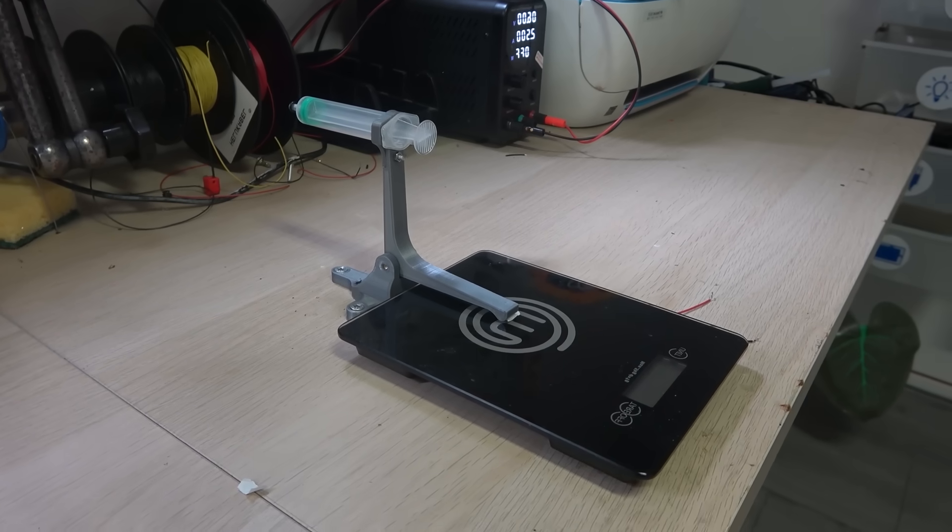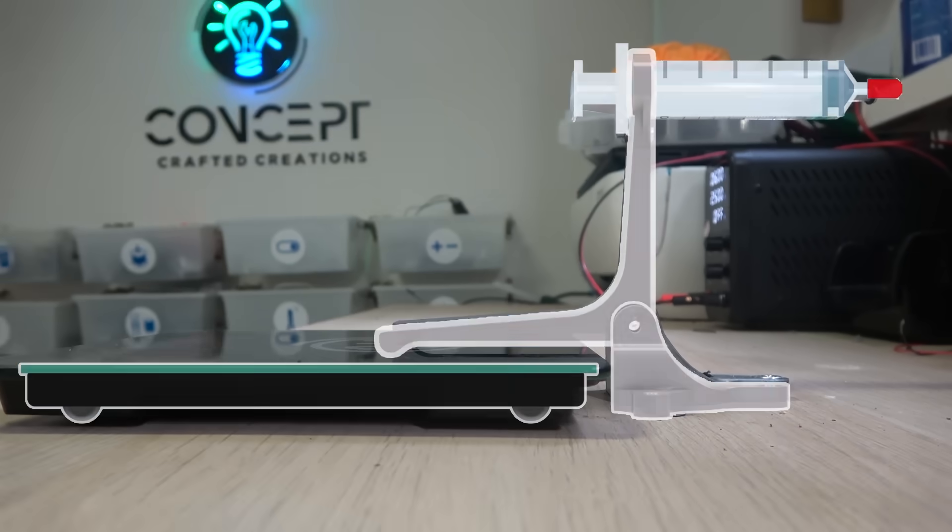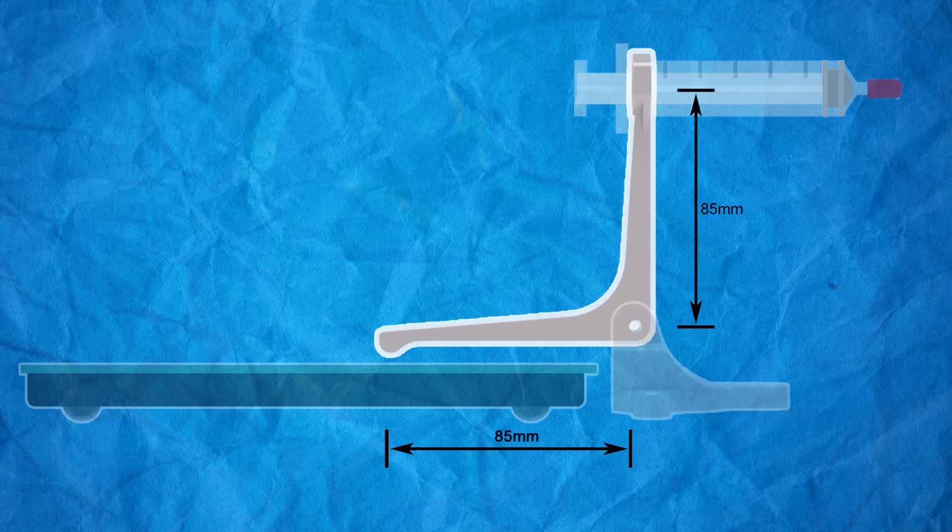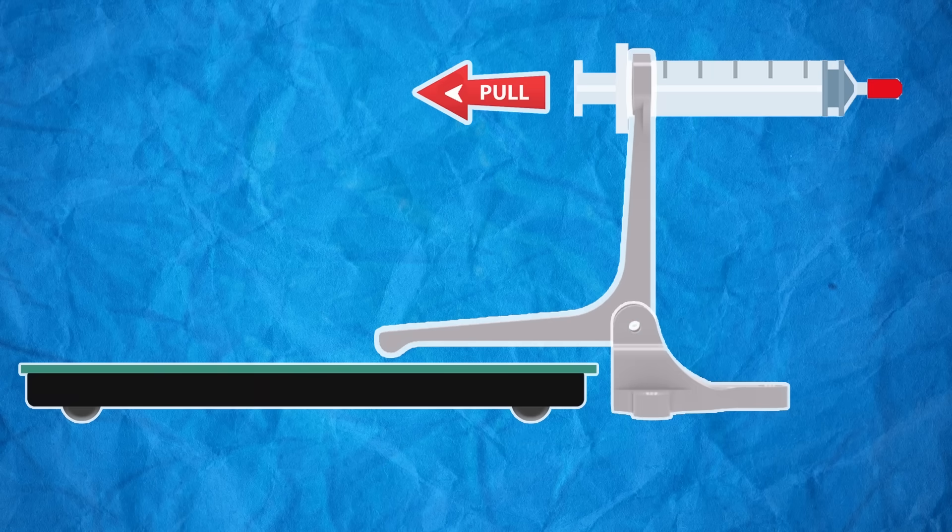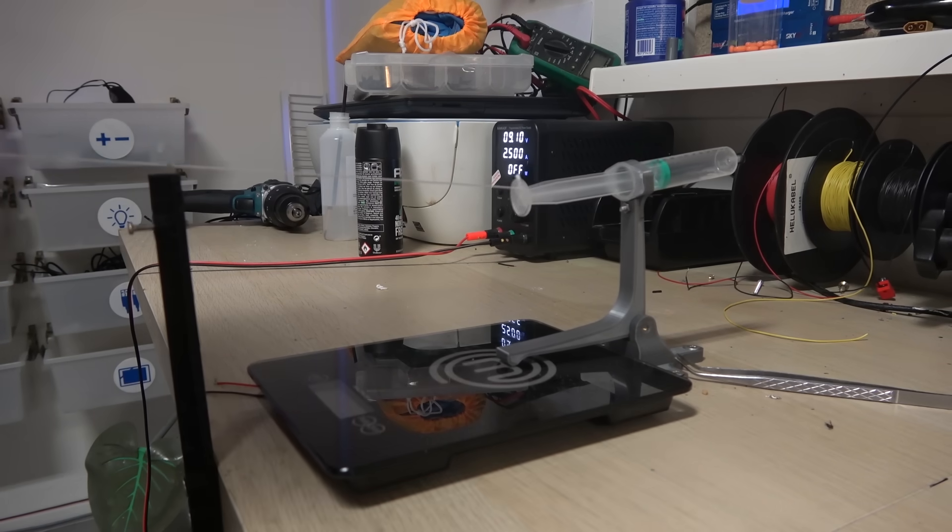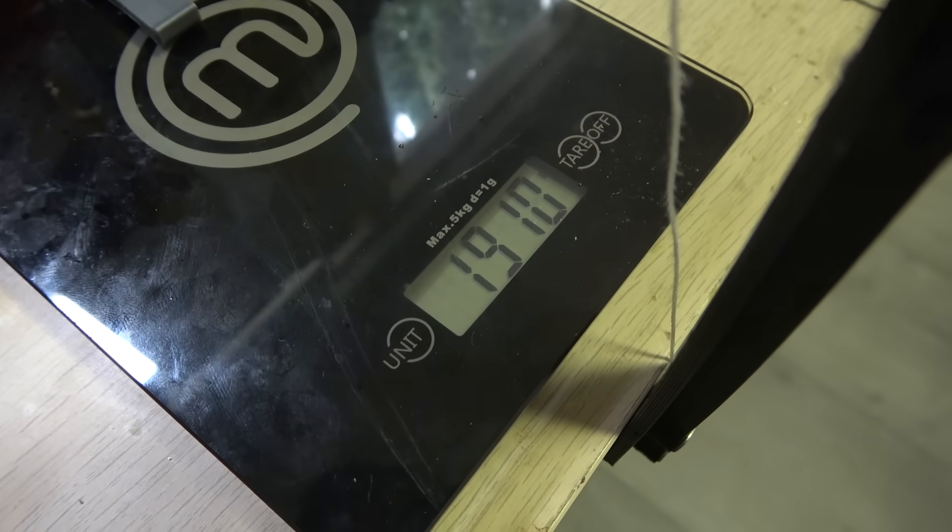To test how well this theory matches reality, I've set up a small test rig. The length of the arm from the pivot point to the center of the syringe is exactly the same distance as from the pivot point to where the other arm presses on the scale. So now if I pull back the piston, the scale should show something close to the calculated value of 1,910 grams. And even though I thought it probably wasn't the most precise way to measure this, we can see it's almost spot on.